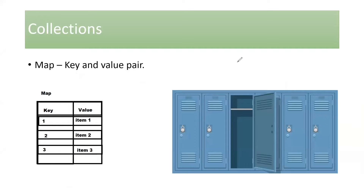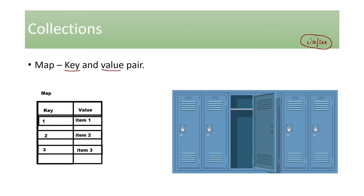Now, what exactly is this Map? In case you are familiar with any OOP concepts, you might know that Map is a combination of a key and a value pair. Just like how we did for other concepts, we'll take a simpler example from day-to-day life. List and Set are pretty much the same — the major difference is that List allows duplicates and Set does not. Map is a little different: it has a key and a value pair.